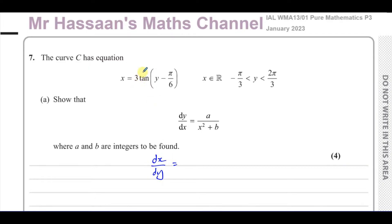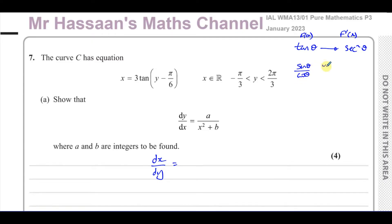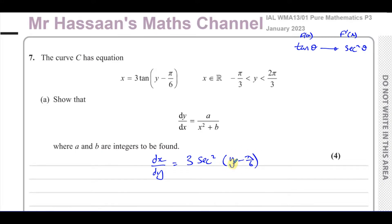When you find dx/dy, you have 3 times tan of something. One of the results we have for the tangent of theta — if you differentiate it — from the formula book: the derivative of tan θ gives you sec² θ. That's derived from sin θ over cos θ using the quotient rule. So 3 tan(y − π/6) differentiates to give 3 sec²(y − π/6). We check the inner function: differentiating (y − π/6) gives 1, so nothing extra to multiply by. So dx/dy = 3 sec²(y − π/6).